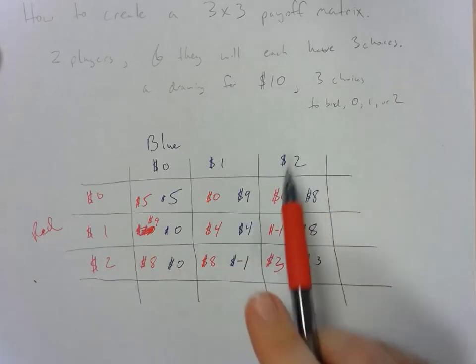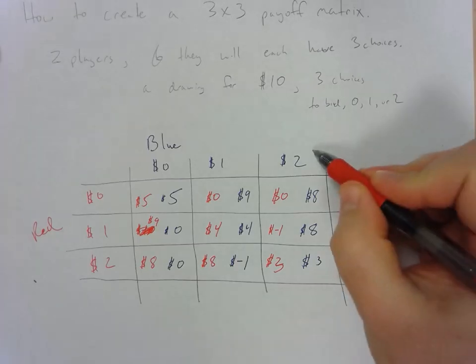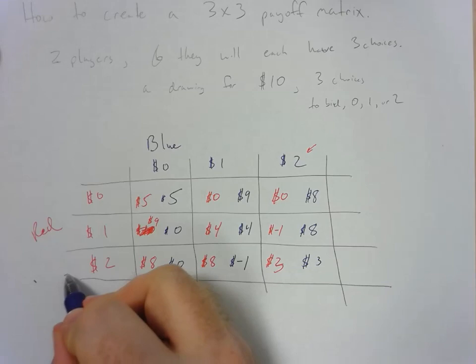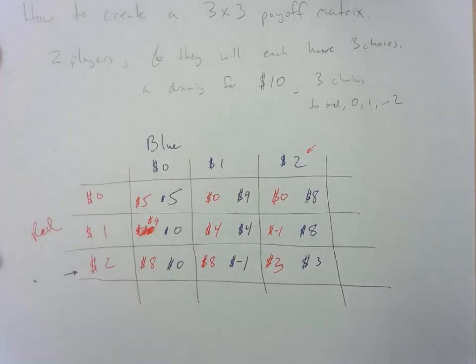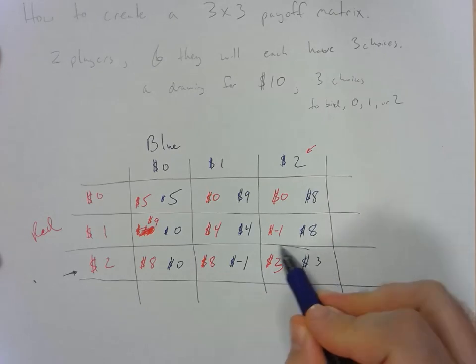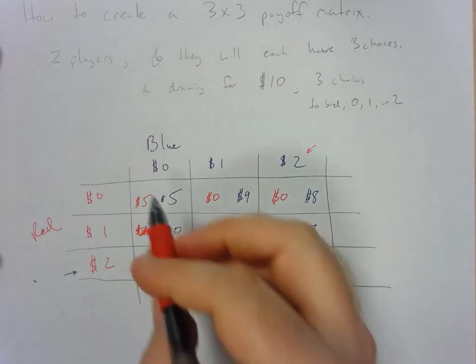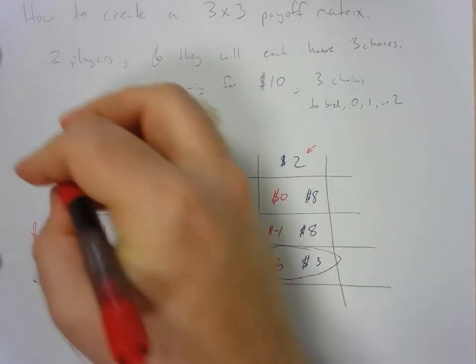We could do the same sort of analysis for red. They would also probably end up choosing 2 dollars. So this is going to be the most likely outcome although it's not technically a Nash equilibrium.